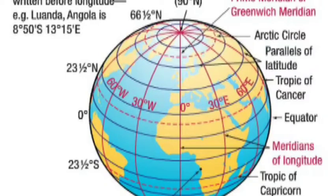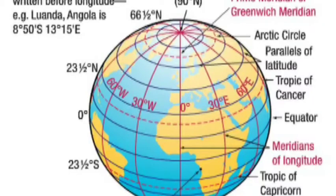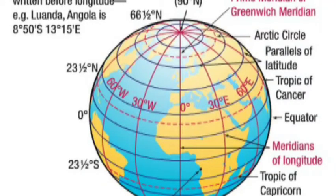Now let's talk about 23 and a half degrees South — that is the Tropic of Capricorn. Like the Tropic of Cancer, this line also marks the limit of the portion of the Earth where the sun rays fall vertically. The maximum sunlight can fall in between the Tropic of Cancer and the Tropic of Capricorn.